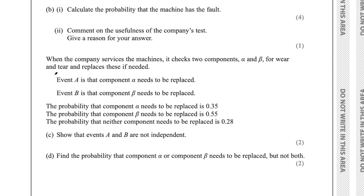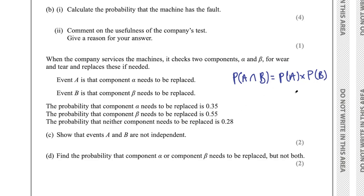Part C says when the company services machines it checks two components, alpha and beta. Event A is that component alpha needs replacing. Event B is that component beta needs replacing. P(alpha) = 0.35, P(beta) = 0.55, P(neither needs replacing) = 0.28. Show that events A and B are not independent. For independent events, P(A intersect B) must equal P(A) times P(B). If they're not independent, this won't hold.